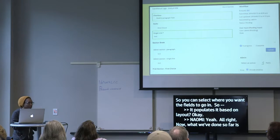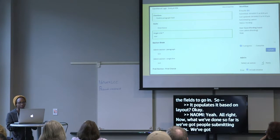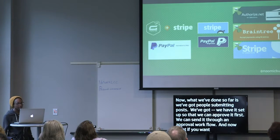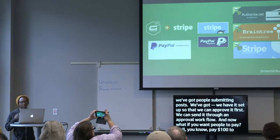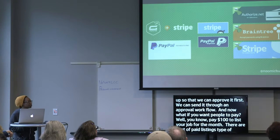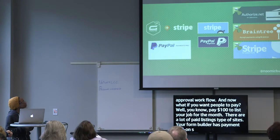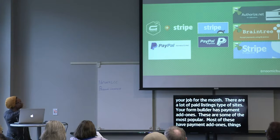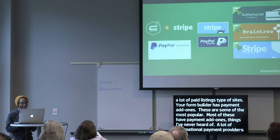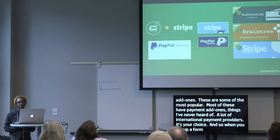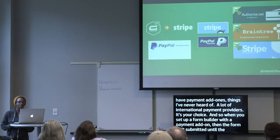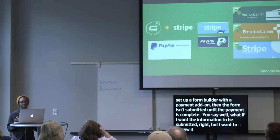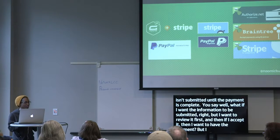So far we've got people submitting posts, set up to approve first, and sent through an approval workflow. Now what if you want people to pay? Pay $100 to list your job for the month — there are a lot of paid listings-type sites. Your form builder has payment add-ons. The most popular are Stripe, PayPal, Authorize.net, and Braintree, but there are all kinds of payment add-ons including international payment providers. When you set up a form builder with a payment add-on, the form isn't submitted until the payment is complete.